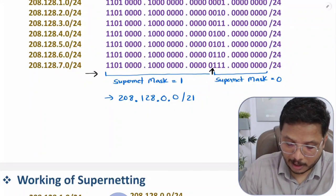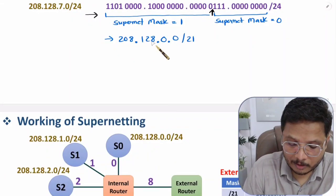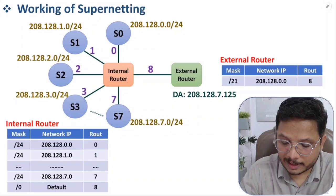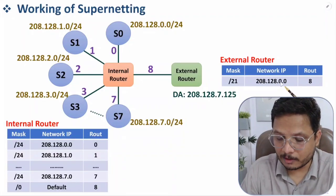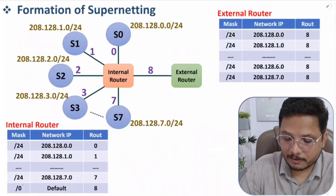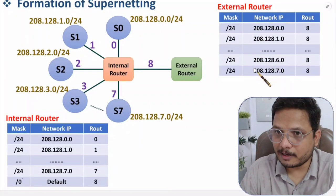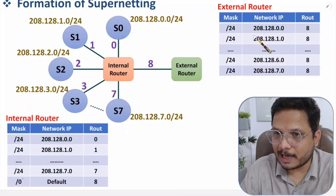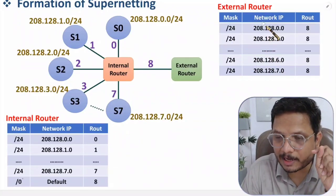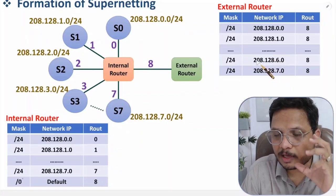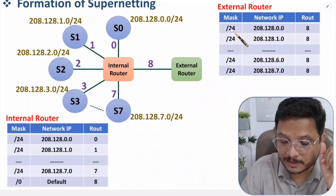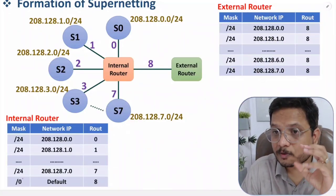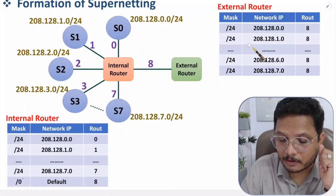Now that we have the supernet mask, we store just that one entry in the external router. Previously we stored many entries; after supernetting we only need one entry. This saves router memory and improves routing efficiency — instead of checking 8 entries, you only check once, so speed increases and memory usage decreases.